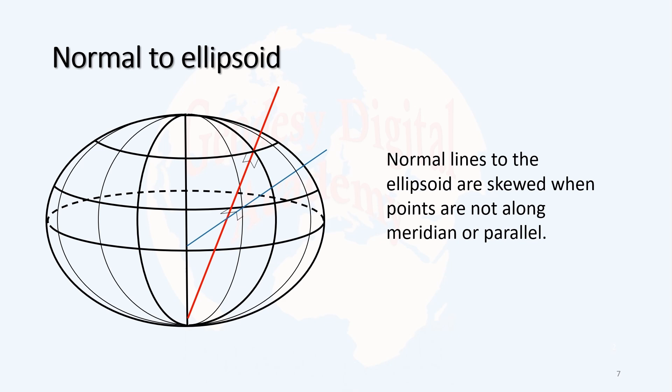We have observed that normal to the ellipsoid will not go through the center of the ellipsoid. So consider two points at two different positions on the surface of an ellipse and draw normal at each. You cannot find any relation between these two lines or these two normals. You cannot find any plane which can contain both of them. It is not possible, and they are not parallel either.